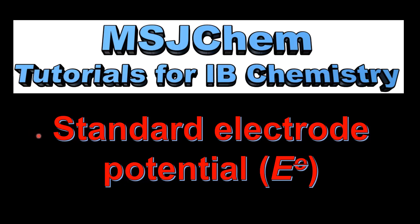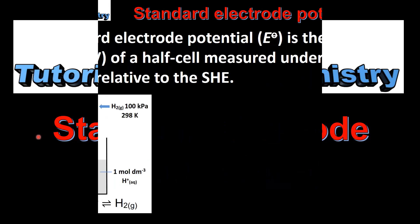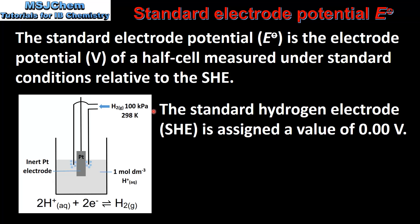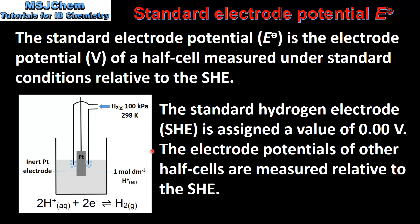This is MSJChem. In this video I'll be looking at the standard electrode potential. The standard electrode potential is the electrode potential measured in volts of a half cell measured under standard conditions relative to the standard hydrogen electrode. The standard hydrogen electrode is assigned a value of zero volts, and the electrode potentials of other half cells are measured relative to it.